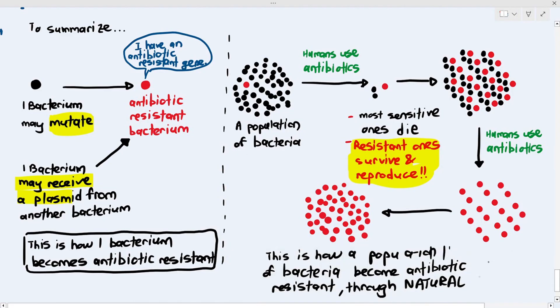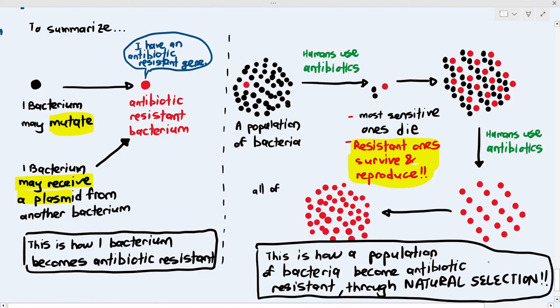So this is how a population of bacteria becomes resistant. If a question asks how one bacterium becomes resistant, say it mutated and now has an antibiotic resistant gene, or it received a plasmid from another bacterium containing the antibiotic resistant gene. If asked how a population of antibiotic resistant bacteria developed, say too much antibiotic use caused sensitive bacteria to die and resistant ones to survive and reproduce, passing the resistant gene to the next generation — so the new population is now antibiotic resistant.